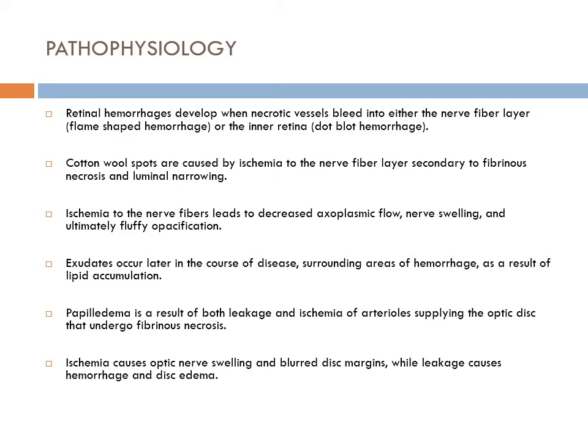Then retinal hemorrhages develop when necrotic vessels bleed into either the nerve fiber layer, producing flame-shaped hemorrhages, or into the inner retina, producing blot hemorrhages. Hypertension is generally characterized by flame-shaped hemorrhages because of the location of blood within the nerve fiber layer. Cotton wool spots develop due to ischemia of the nerve fiber layer secondary to fibrinous necrosis and luminal narrowing, causing decreased axoplasmic flow, nerve swelling, and ultimately fluffy opacification.